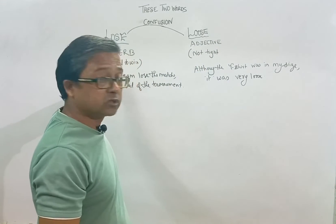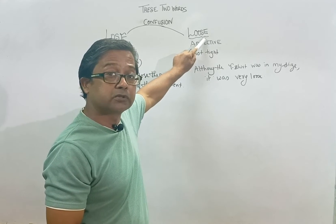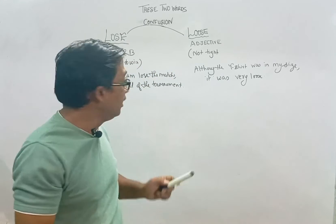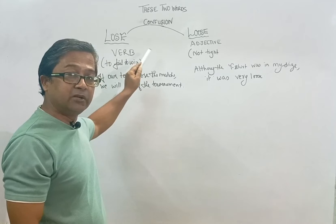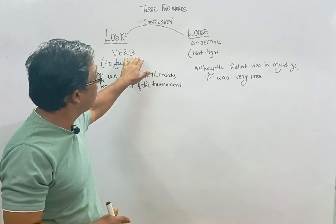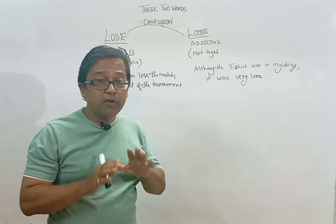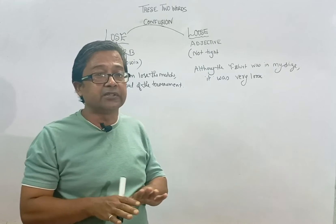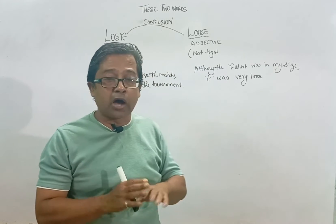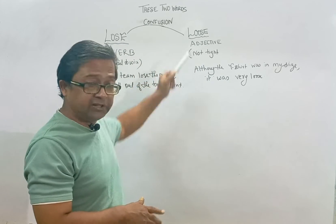The two words are 'lose,' spelled L-O-S-E, and 'loose,' spelled L-O-O-S-E. So what is the difference between these two words? First of all, 'lose' (L-O-S-E) is a verb, and 'loose' (L-O-O-S-E) is an adjective. If we look in a technical or grammatical sense, these two words are different parts of speech — one is a verb and the other is an adjective.